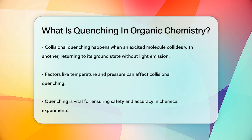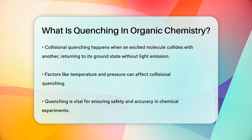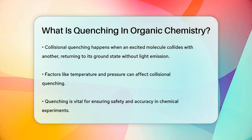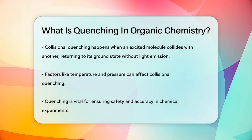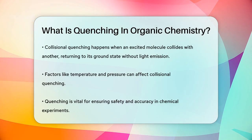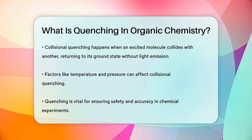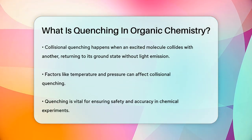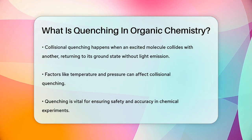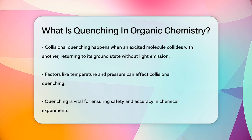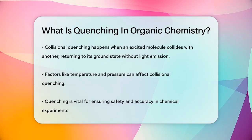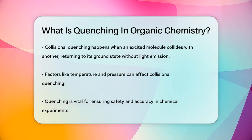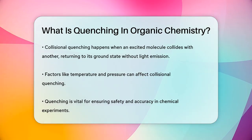Collisional quenching occurs when an excited molecule collides with another molecule, causing it to return to its ground state without emitting light. This is a common process that can be influenced by factors such as temperature and pressure.